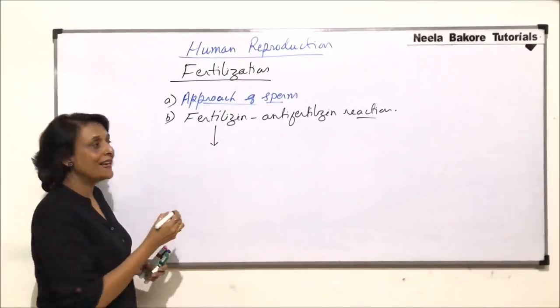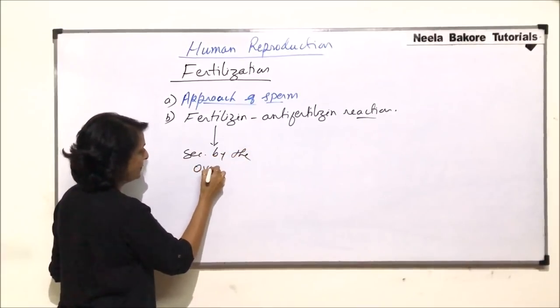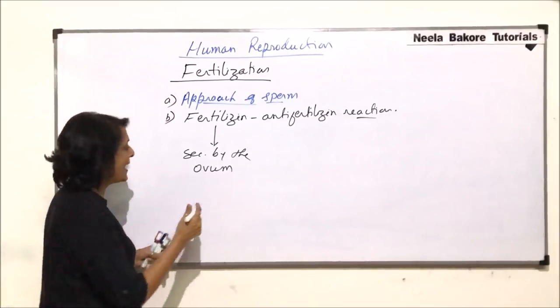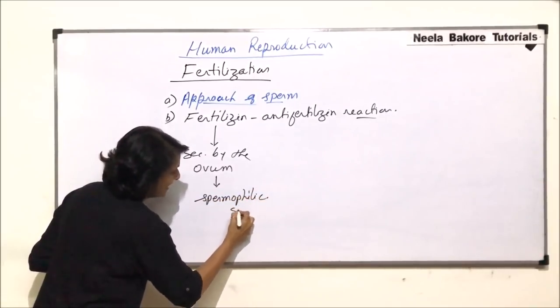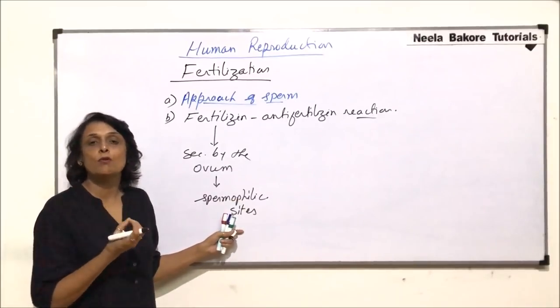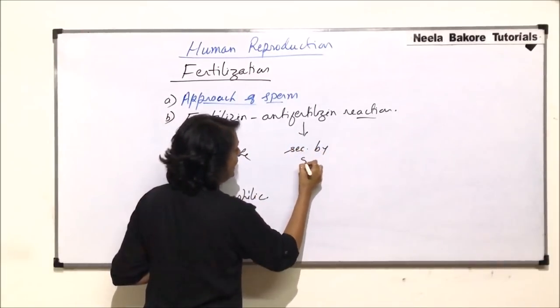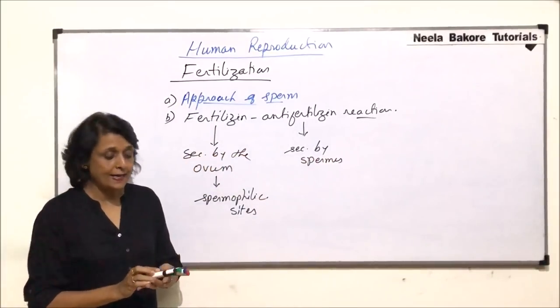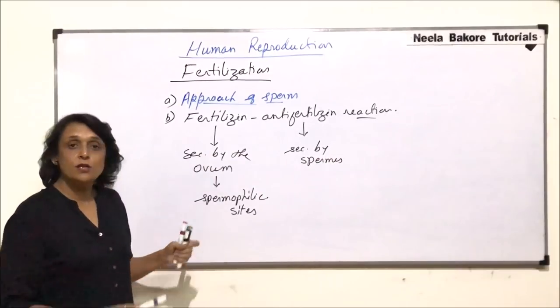Fertilizing is secreted by the ovum or by the egg. Fertilizing is a chemical which has spermophilic sites. Spermophilic sites are the places where the sperms are going to get attached. Anti-fertilizing is a substance which is secreted by the sperms. Now why this identification? So that the uniqueness of the species can be maintained.